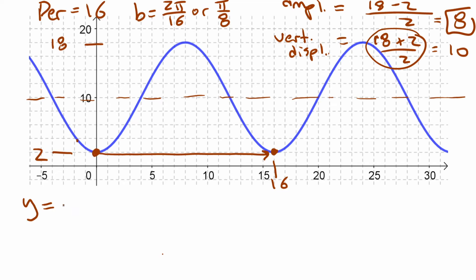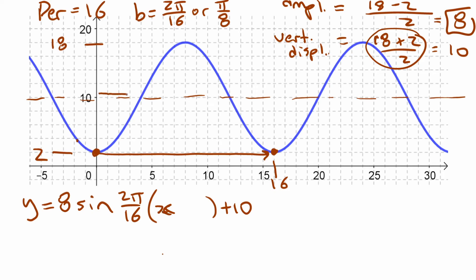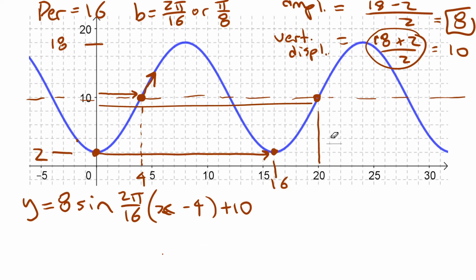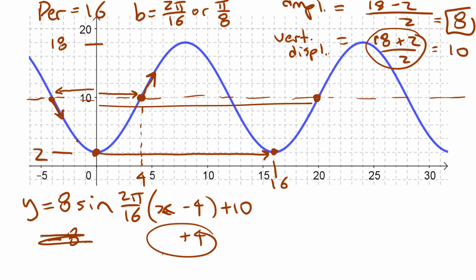For a sine equation: y equals 8 sine of (2 pi over 16)(x minus 4) plus 10. The b value is 2 pi over 16, or pi over 8. The phase shift is x minus 4, because the curve starts at the middle on the way up at x equals 4. You could also use x minus 20, but you want to choose the closest point. If you need a phase shift anyway, you typically don't write an equation with a negative amplitude at the front.